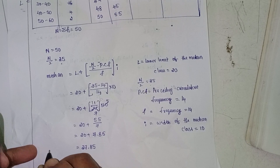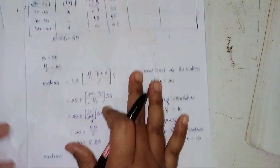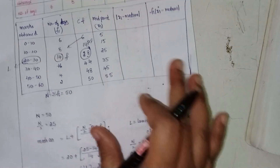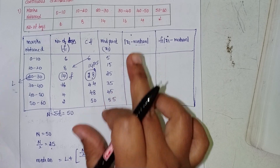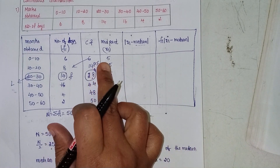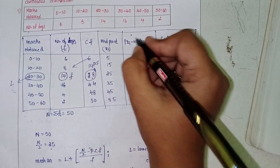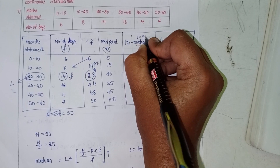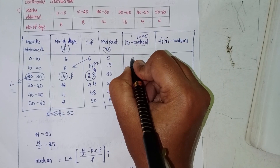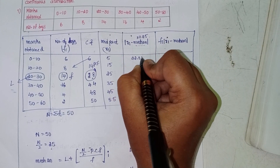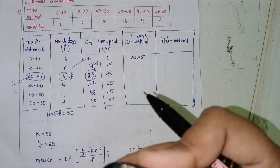Now calculating xi minus median: xi for the first class is 5, median is 27.85, so the modulus of 5 minus 27.85 is 22.85. Continuing for each class interval.